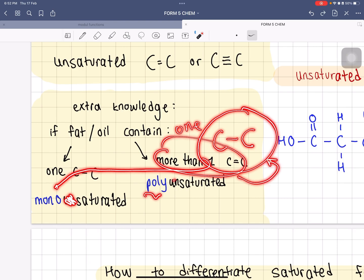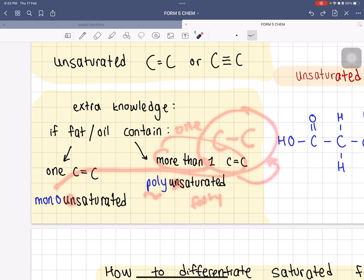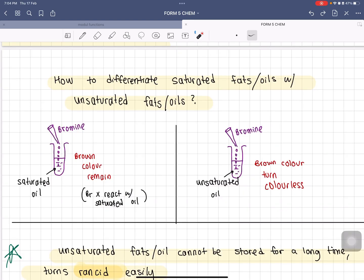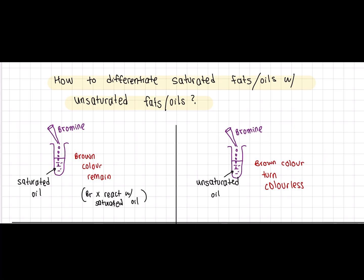Here's a test on how to differentiate between saturated and unsaturated fats or oils. First we're gonna take our bromine. As we all know, bromine is initially brown color. If the oil is saturated, when you add bromine into the saturated oil, the brown color remains. The way I like to memorize this is: because it's so saturated, the bromine isn't able to really react fully with all the oils, hence the brown color remains.